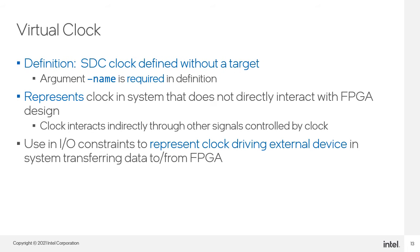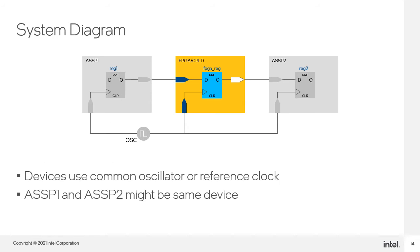A virtual clock is a defined SDC clock that does not have a target. When defining virtual clocks, you must use the name argument in the create_clock SDC command. The virtual clock does not directly interact with the FPGA design, but is a representation of the off-chip clock that launches incoming data or latches outgoing data. As a result, the virtual clock is used in the IO constraints. In this example, the FPGA is in the center of the system with ASSPs on either side. ASSP-1 launches data to the FPGA and ASSP-2 captures data from the FPGA. There is a common oscillator driving all three devices on the board, so all clocks share a common relationship.